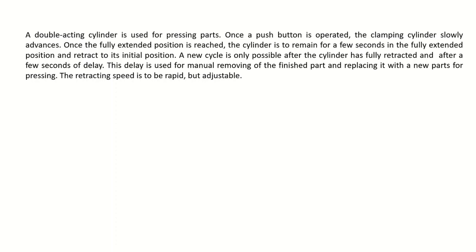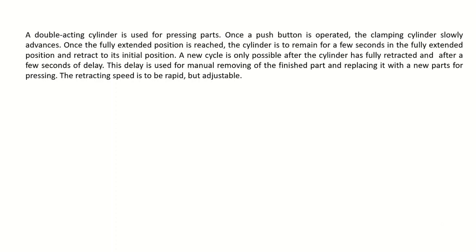Looking at this problem statement, we can identify all the components we need: a double acting cylinder, a directional control valve operated by a push button with spring return, two throttle check valves for both retraction and advancing, and two time delay valves. Another important component is the twin pressure valve, because when checking the system for starting a new cycle, both the retracted position condition and the push button signal must both be true — that's why we need the twin pressure valve.